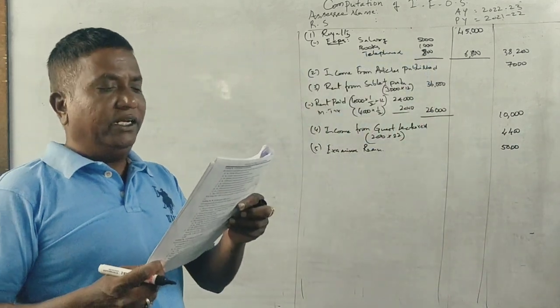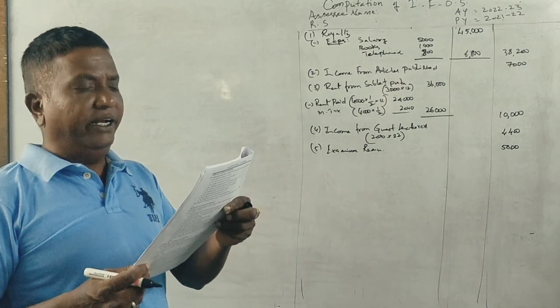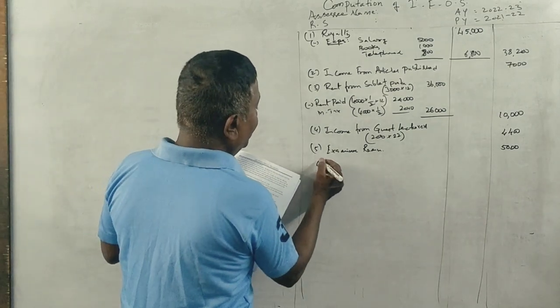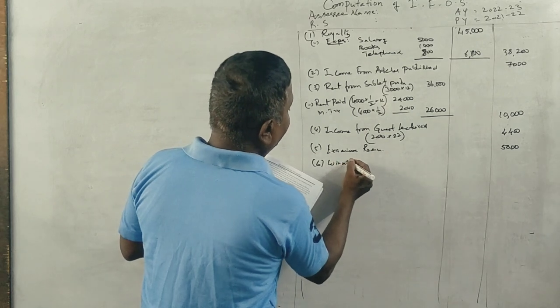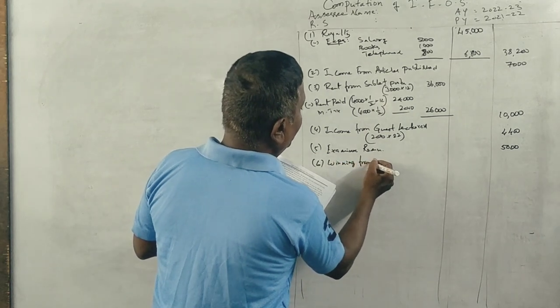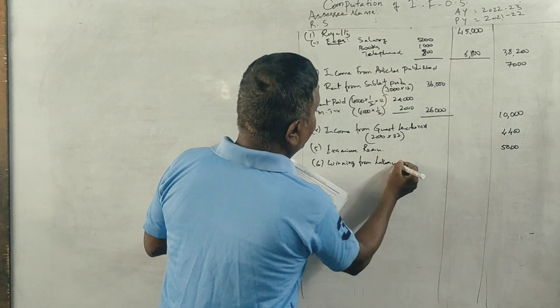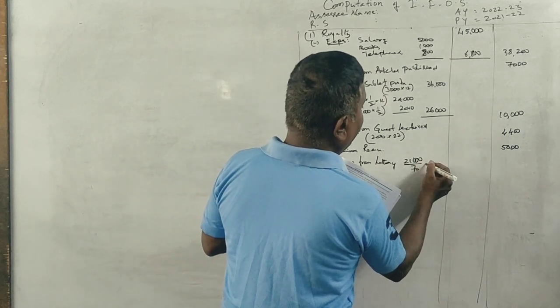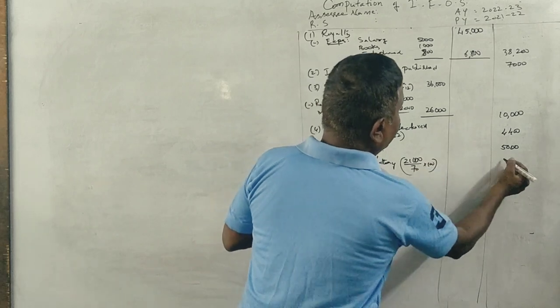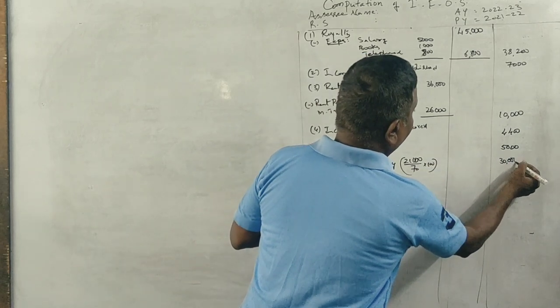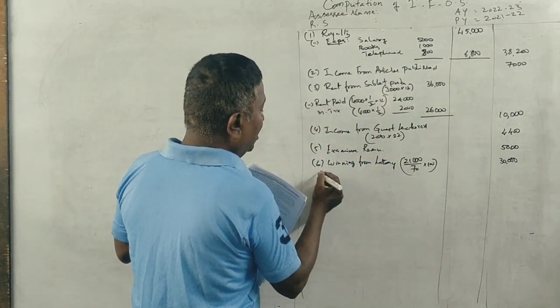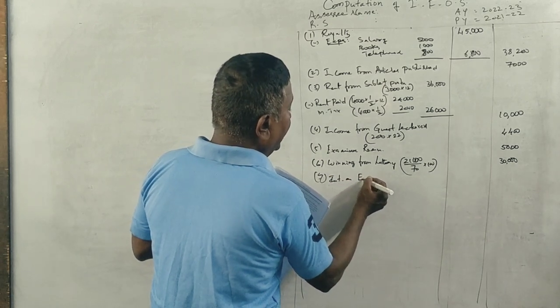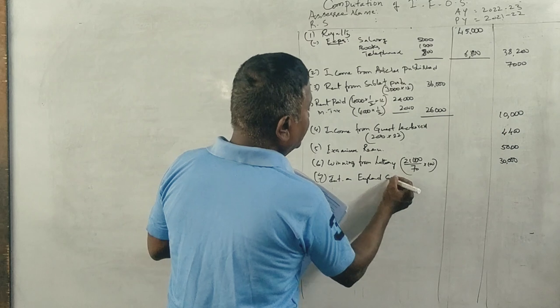Other income: winning from lottery, net interest on Government of England bonds is Rs. 3,000. Now write one after one. Winning from lottery: Rs. 21,000 divided by 70 into 100 is Rs. 30,000. And interest on England government bonds is Rs. 3,000.